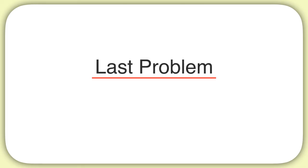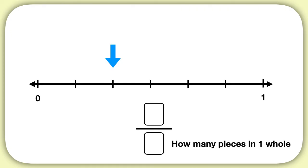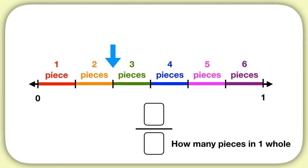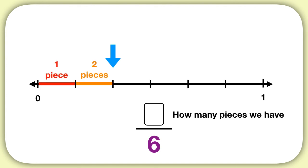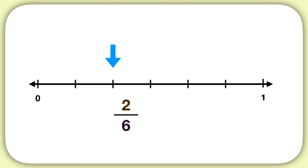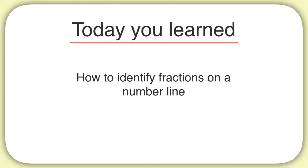Here's your last problem for this video. What fraction does this dash on the number line represent? In your fraction, the denominator — or how many pieces in one whole — is 1, 2, 3, 4, 5, 6. Our denominator is 6. Then our numerator, which represents how many pieces we have, we can count: 1, 2. Our numerator is 2. And so this dash represents the fraction 2 sixths. Today you learned how to identify fractions on a number line. Thank you.